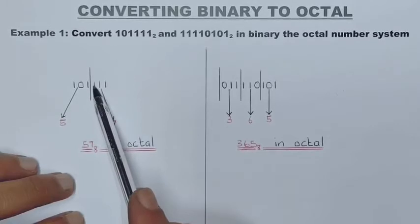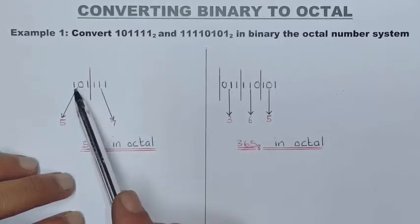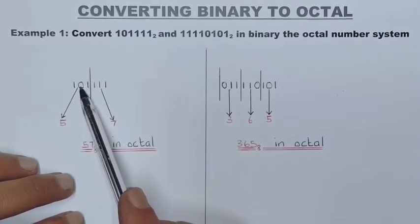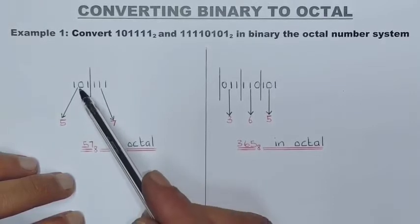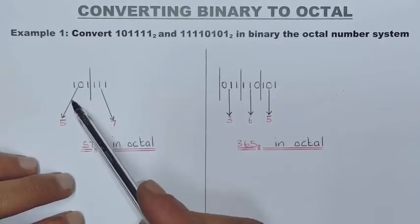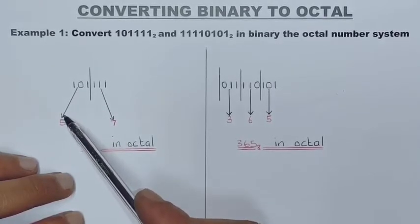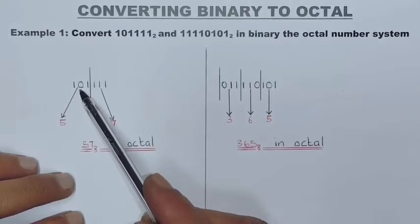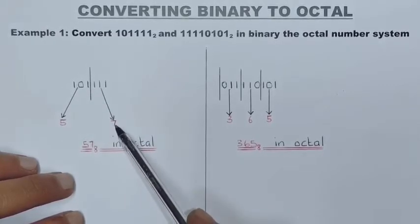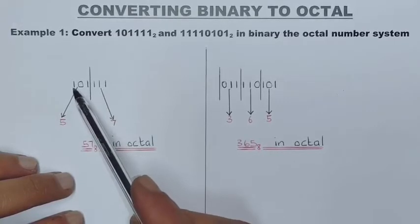There's my first group, 101111, and there's my second group, 101. So what you need to do is you need to write down the decimal equivalent for each binary number. The first one will be 7, which is 111, and the next one will be 101, which is 5 in decimal.